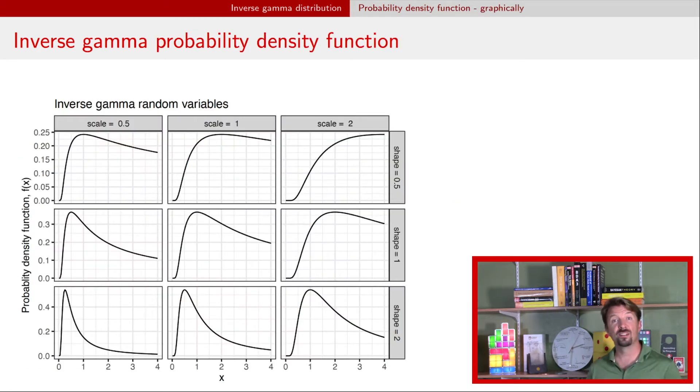Taking a look at some example probability density functions, the inverse gamma distribution has the same general shape for its probability density function, no matter the values of the shape and scale parameters. You'll always see the PDF start at 0, 0, and a quick ramp up there, and then a single mode, and then a slow decay on the right-hand side.